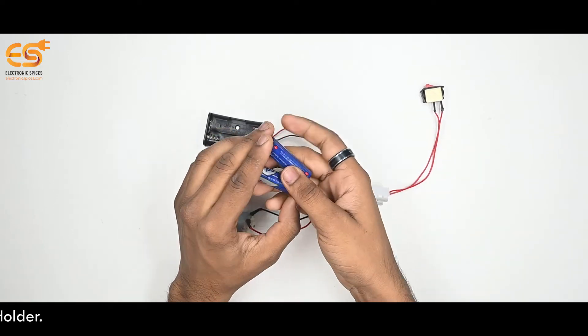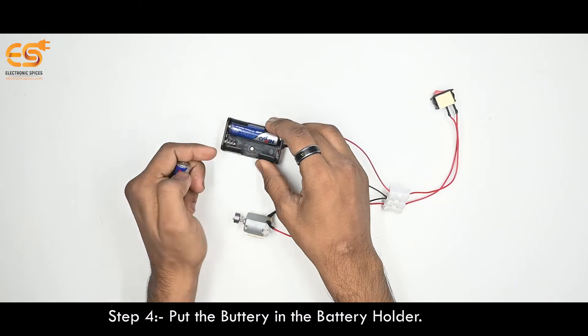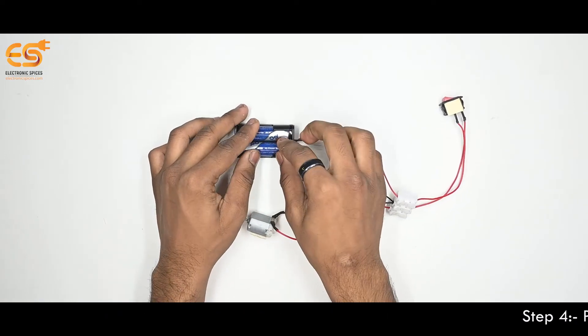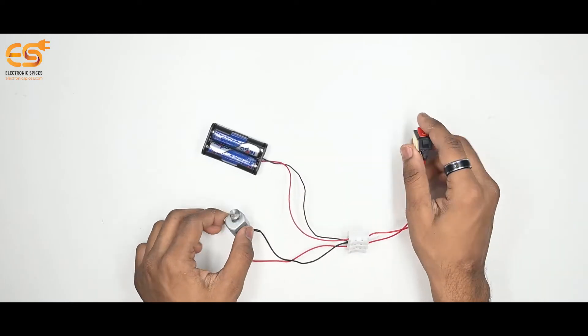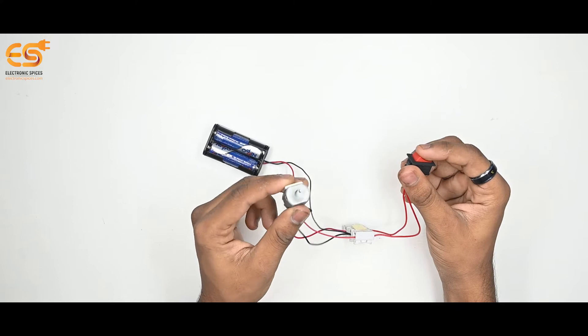After completing your circuit, put the battery in the battery holder. When we turn on the switch, our vibration motor gets started vibrating as you can see.